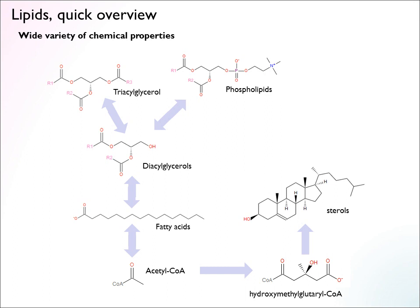These are biosynthetic pathways. The fatty acid branch is reversible — fat can be oxidized going in the other direction, and you can also break down phospholipids and membranes. But the sterol branch is really irreversible — it's a pure synthesis product, and sterols cannot be catabolized for energy. That's kind of unique with this class of molecules.